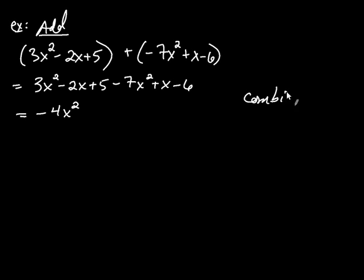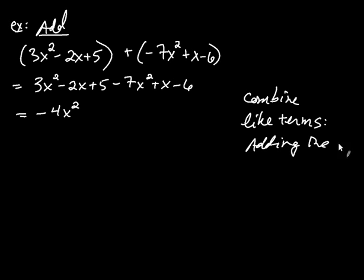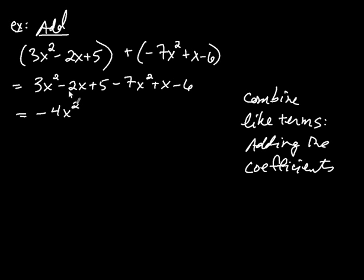Like terms are terms that have the same variable and the same exponent — so x squared and x squared. The next two like terms are the x terms: negative 2x and positive 1x. Adding the coefficients, negative 2 plus positive 1 is negative 1, so it's negative 1x, which we write as minus x. Finally, the constant terms: 5 plus negative 6 is negative 1. And that's our answer.